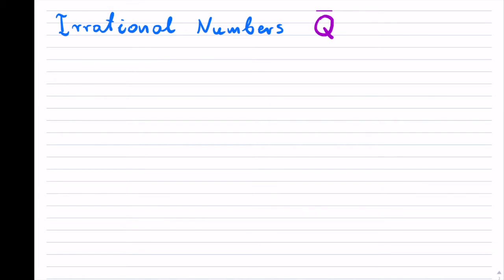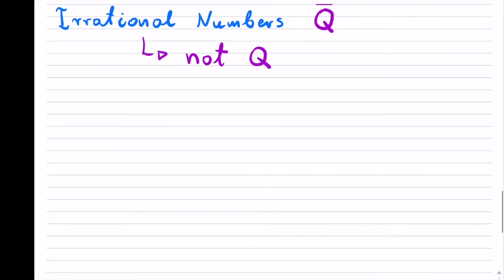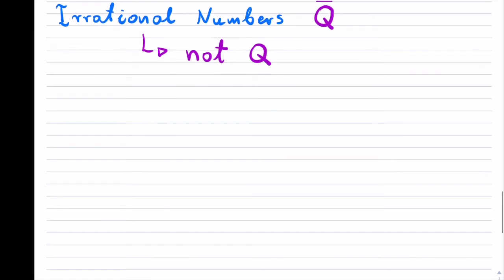Or simply, this set you can say that it is a set of not rational numbers. So it is all the numbers that are not rational. Now, this is the fundamental definition.